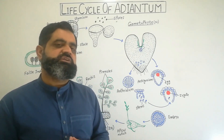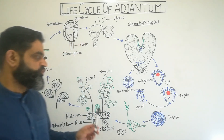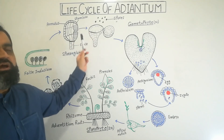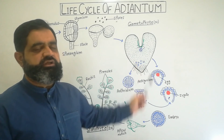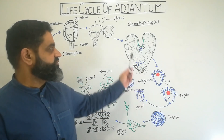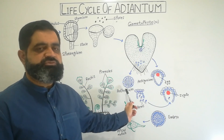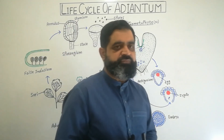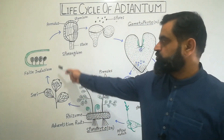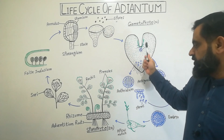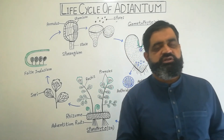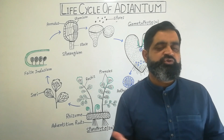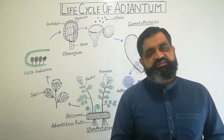So in Adiantum or ferns there are two types of generations. The sporophyte — 'sporo' means spores, 'phyte' means plant — produces spores by meiosis. The second generation is the gametophyte — 'gameto' means gametes, 'phyte' means plant — which produces gametes: eggs and antherozoids. There is an alternation of generations: the sporophyte gives rise to the gametophyte, and the gametophyte gives rise to the sporophyte, completing the life cycle of Adiantum.